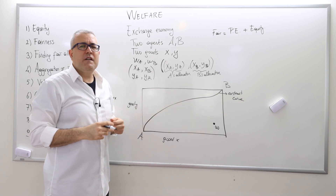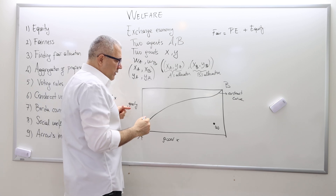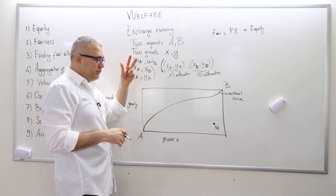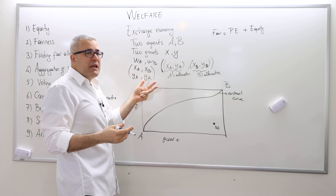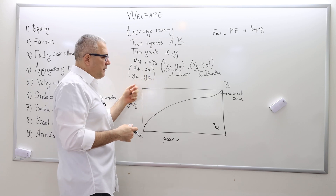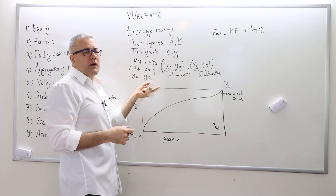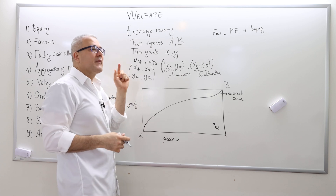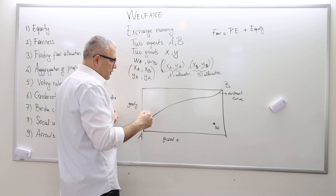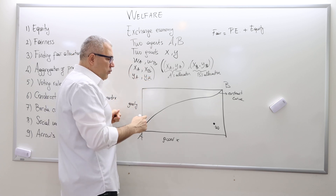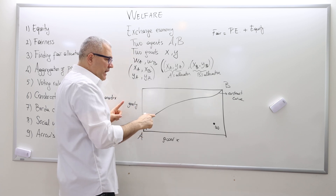So how can I find a fair allocation? Well, what we can do — obviously there may be infinitely many possible fair allocations — I'm going to show you just one way of finding at least one Pareto-efficient fair allocation. So what we can do is divide the initial endowments equally.